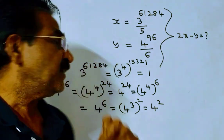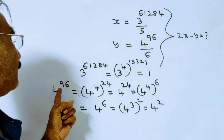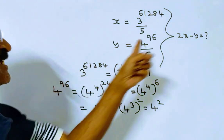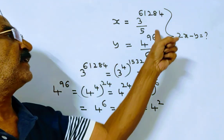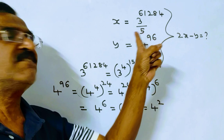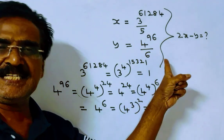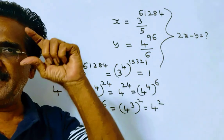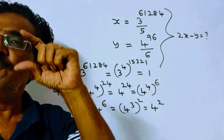So finally, when 4 power 96 is divided by 6, the remainder is 4.